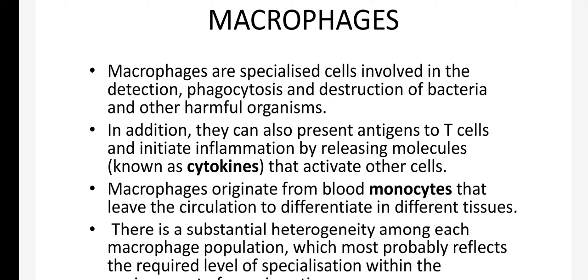When monocytes migrate to different tissues, they change into macrophages. There are also structural changes — they increase in size and develop different types of pseudopodia. These macrophages originate from monocytes, leave the blood circulation, and differentiate in different tissues. Depending upon their location, we name the macrophages differently.